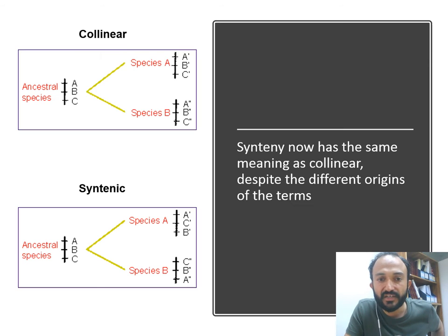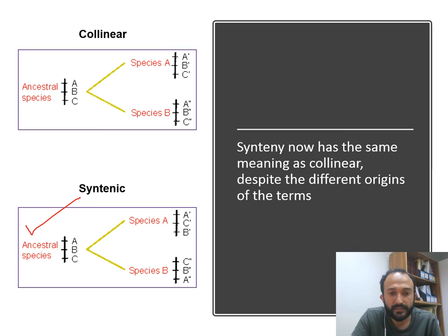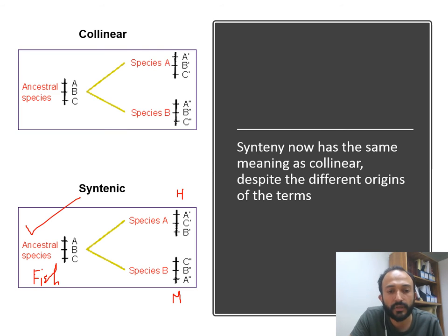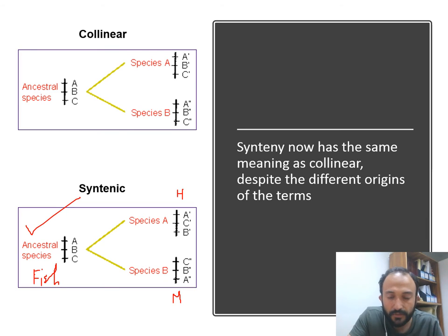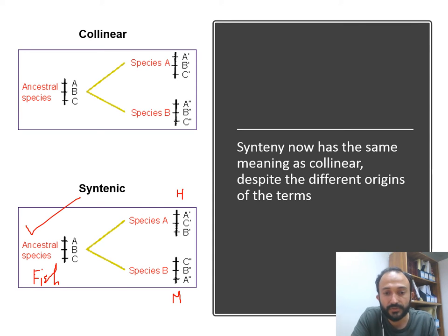To explain it more clearly: here you can see an ancestral species — this is fish — and this is human, and this is mouse. On chromosome of fish there were three genes, A, B, and C, present in the same order. When we look at human and mouse, they are also present on the same region, but the order is not necessarily the same. Here A, C, B are together — ABC are shuffled or inverted — but they are present in the same region together. That is called synteny — there is a syntenic region between fish, human, and mouse.